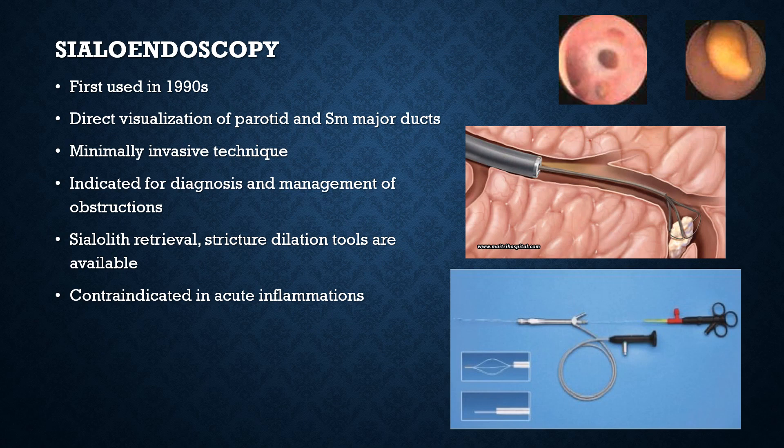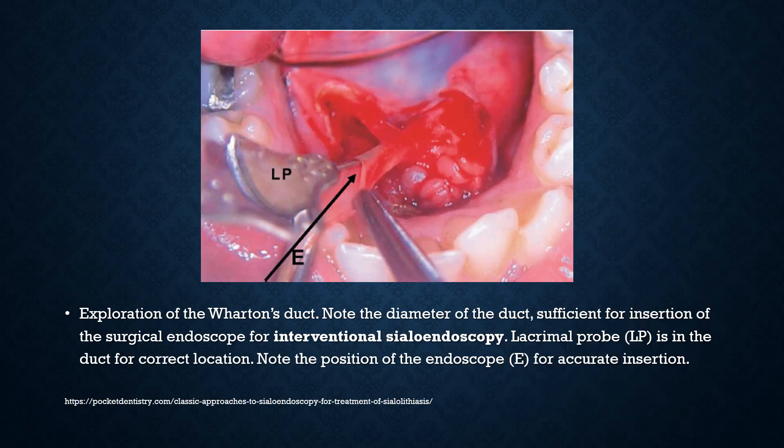Sialendoscopy is contraindicated in acute inflammations. This example shows exploration of Wharton's duct — note the diameter of the duct, which is sufficient for insertion of a surgical endoscope for interventional sialendoscopy. A lacrimal probe has been used in this duct for correct location, and it is important to note the location of the endoscope for accurate insertion.